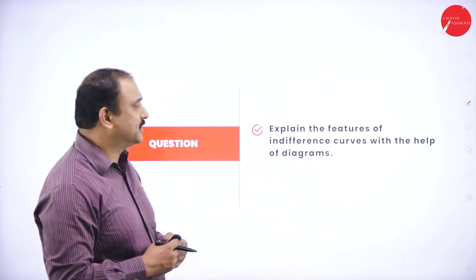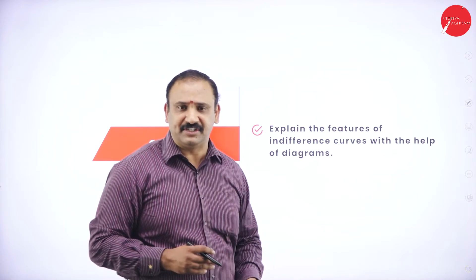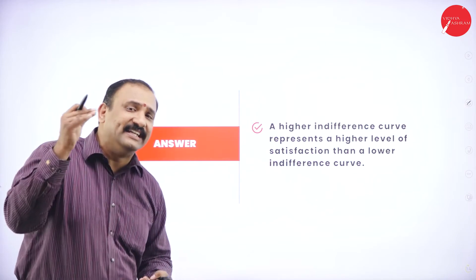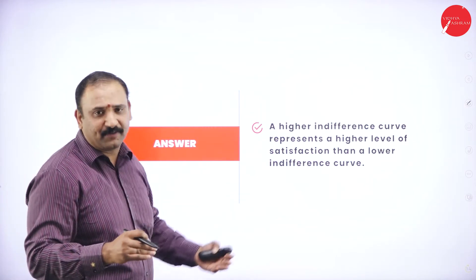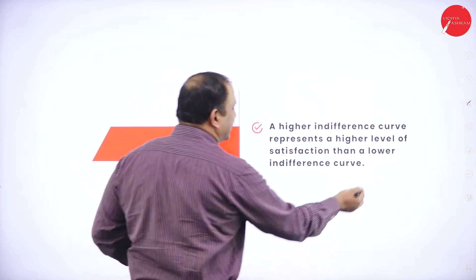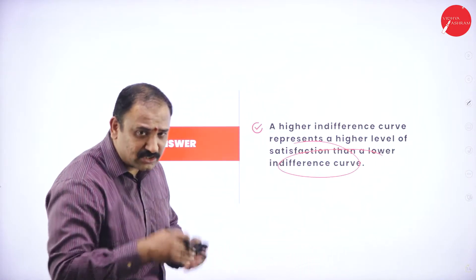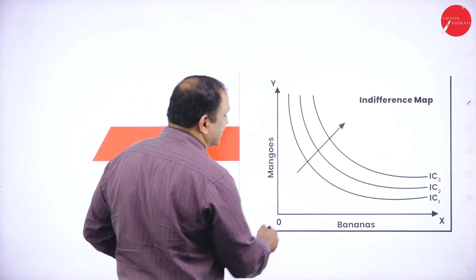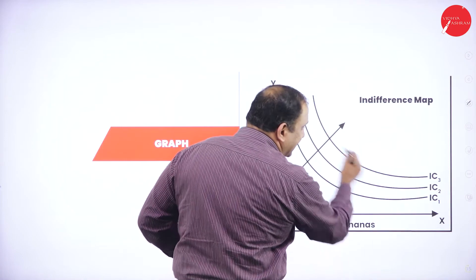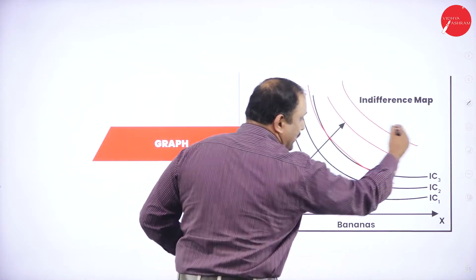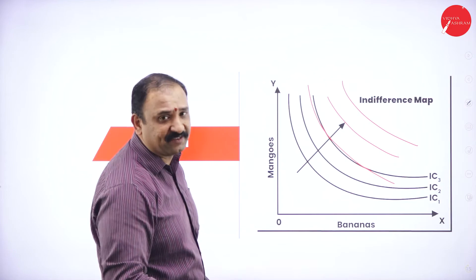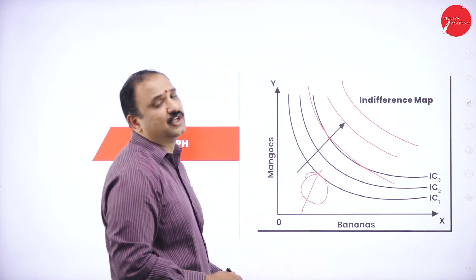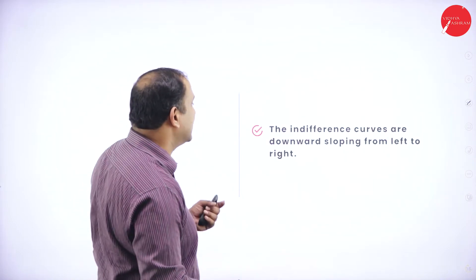With that, we move to the next important concept called the features of indifference curves which is very important. The first feature is that the higher the indifference curve represents a higher level of satisfaction and lower the indifference curve, lower the satisfaction. If you see higher the indifference curve, higher the values, it starts going up like this. Higher will be the level of satisfaction. Lower the indifference curve, lower will be the satisfaction levels.